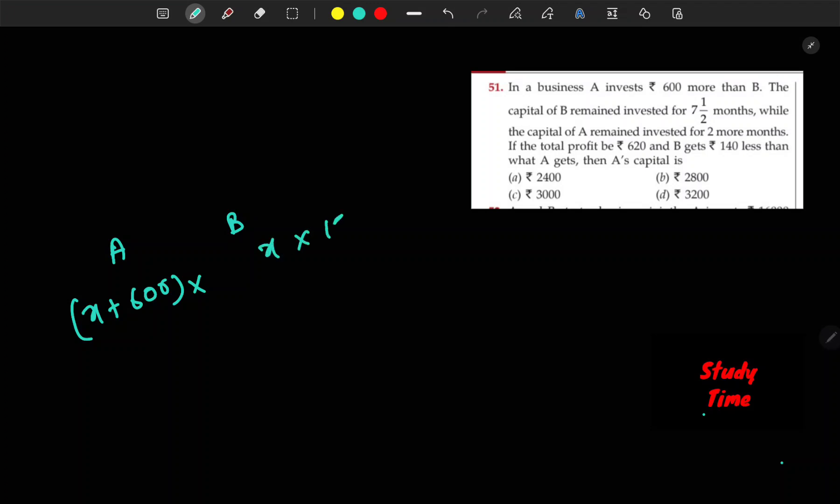X into 15 by 2. And how much is it? 19 by 2. And how much is it? 19 is to 12.